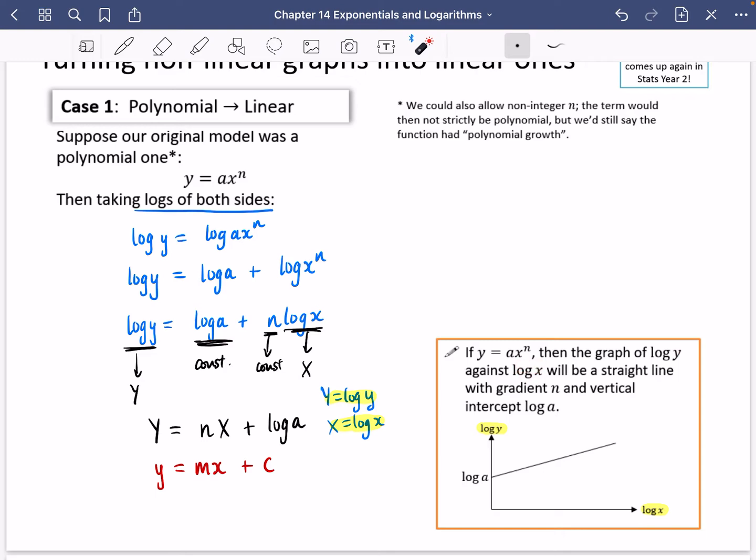So what I've written is that if y is ax to the n, then the graph of log y against log x, in other words, this bit here, this is log y against log x, will be a straight line with gradient n and vertical intercept at log a. Well, we can tell that it's the vertical intercept because this is the y-intercept that we've got here. In this case, it would be the log y-intercept because it's like the plus c. And the n is like the gradient of the normal straight line there.